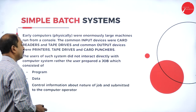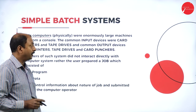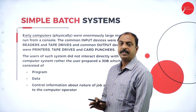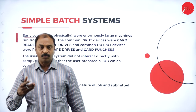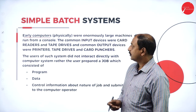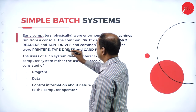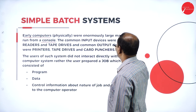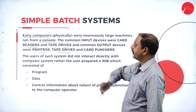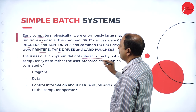The first type is the simple batch system. This is a type of operating system used in early days, especially with mainframe computers. Mainframe computers were very huge in size, set up in one location, and users worked through different terminals around the system. The large system ran from a console; input devices were card readers and tape drives, and output devices were printers or tape drives.